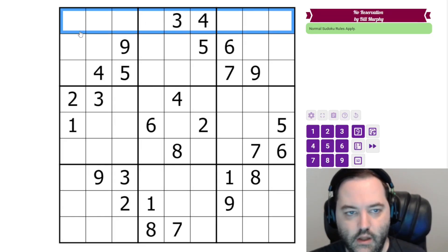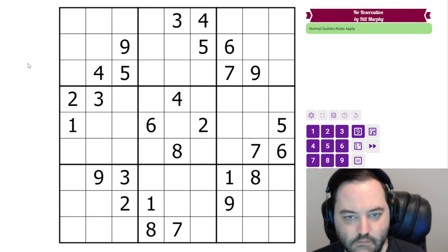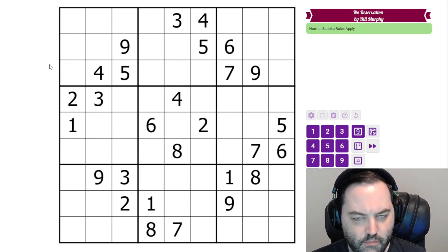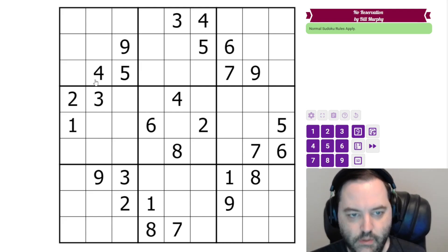We have normal Sudoku rules, 1 to 9 in each row, column, and 3x3 box, and that's it. Those are the rules.